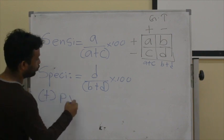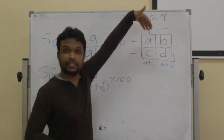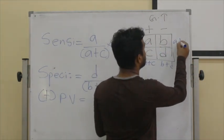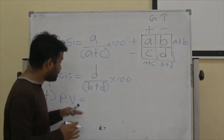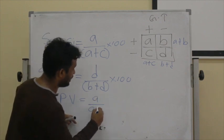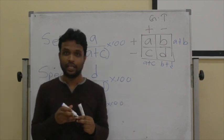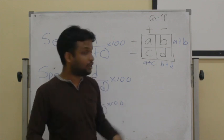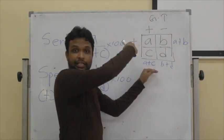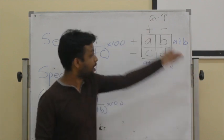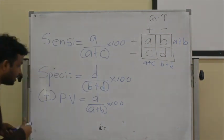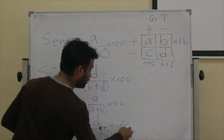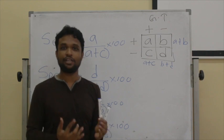The next concept is positive predictive value. Up to now we discussed these terms vertically; now we are talking about them horizontally. Positive predictive value is A divided by A plus B, multiplied by 100. If the screening test is positive, what is the probability of having the disease? Previously we asked: if the individual has the disease, what is the probability of a positive screening result? Now we ask: if the screening test is positive, what is the probability of having disease? The negative predictive value is D divided by C plus D, multiplied by 100 — if the screening test is negative, what is the probability of not having the disease?